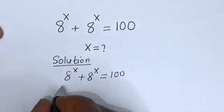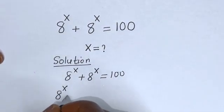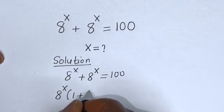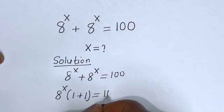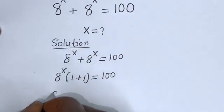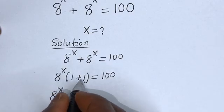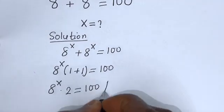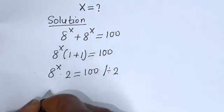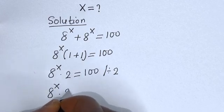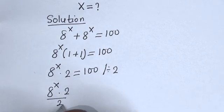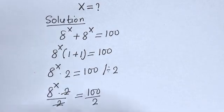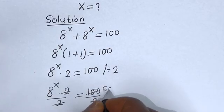Now 8 raised to power s is common, let's bring it out. This is 8 raised to power s, bracket: if you divide this by this we have 1, plus if you divide this by this we have 1, is equal to 100. This is 8 raised to power s multiplied by 1 plus 1, that is 2, is equal to 100. Let us divide both sides of this equation by 2.